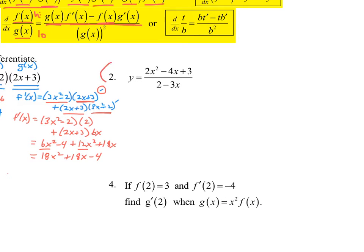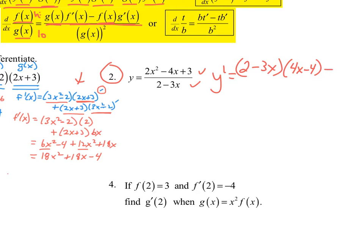Number 2 is the quotient rule. How do I know? It's a quotient — you have a numerator and a denominator. So y prime equals low, which would be 2 minus 3x, times the derivative of the high — so low d high — and that would be 4x minus 4, which is the derivative of the high. Then remember with the quotient rule we have a minus; with the product rule we have a plus. Those should go hand in hand.